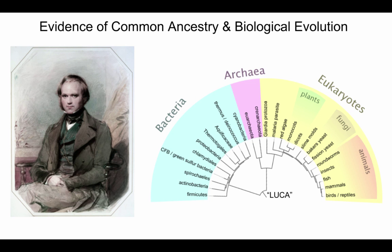In this video I'm going to talk about evidence of common ancestry in biological evolution. We have a picture of Charles Darwin, and we'll talk about how he came up with his model, but we'll start with a more modern view. All living organisms on Earth are considered related back to a universal common ancestor, sometimes referred to as LUCA, or the Last Universal Common Ancestor.